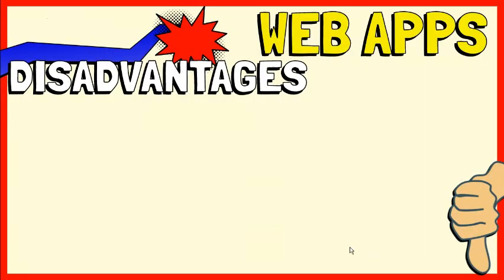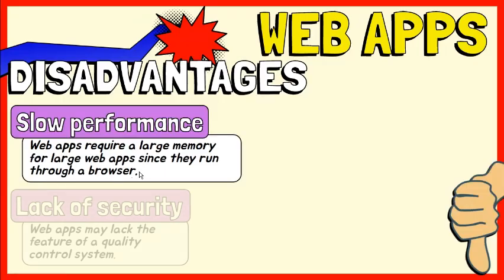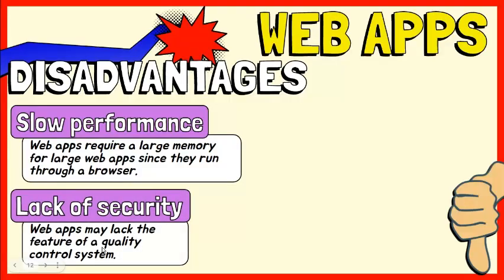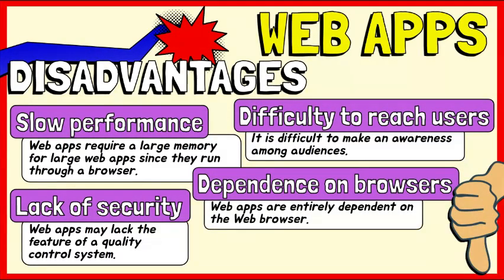Let's take a look at the disadvantages of web apps. A large web app performs considerably slower than a native app because web apps require a minimum device memory since they run through a browser. Web apps may lack the feature of a quality control system, resulting in safety and security issues. Web apps are not available in the App Store and Play Store, so it is difficult to make an awareness among audiences.